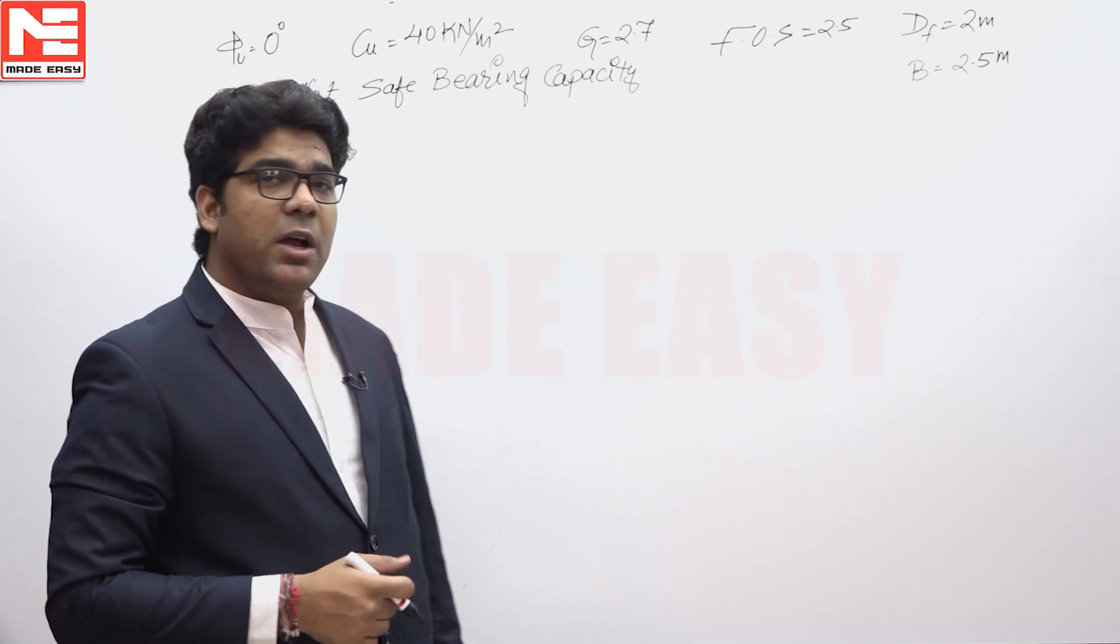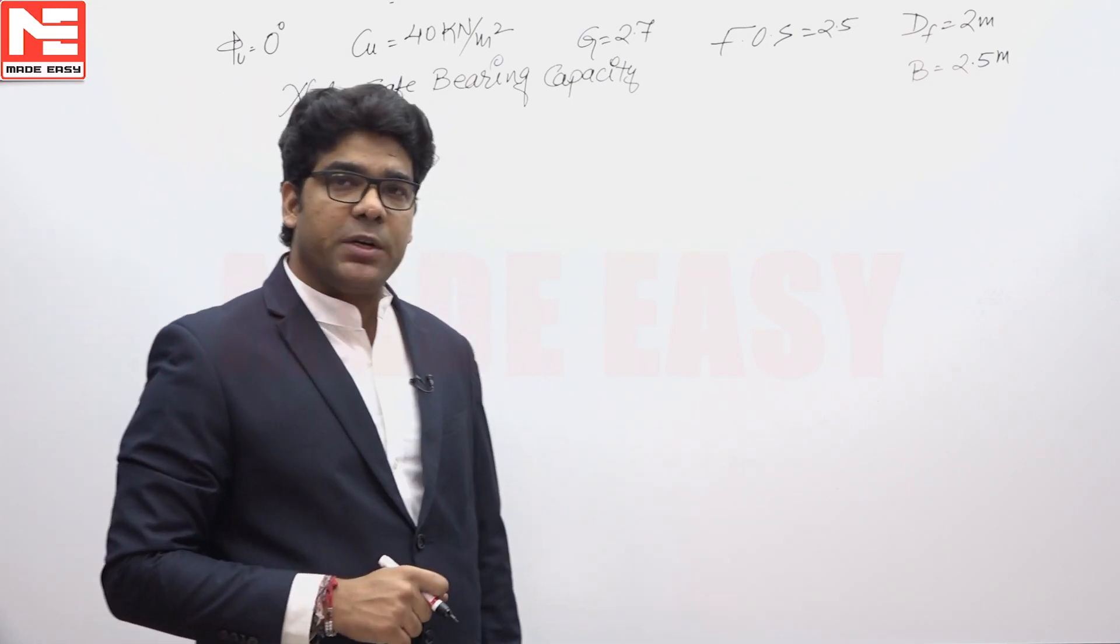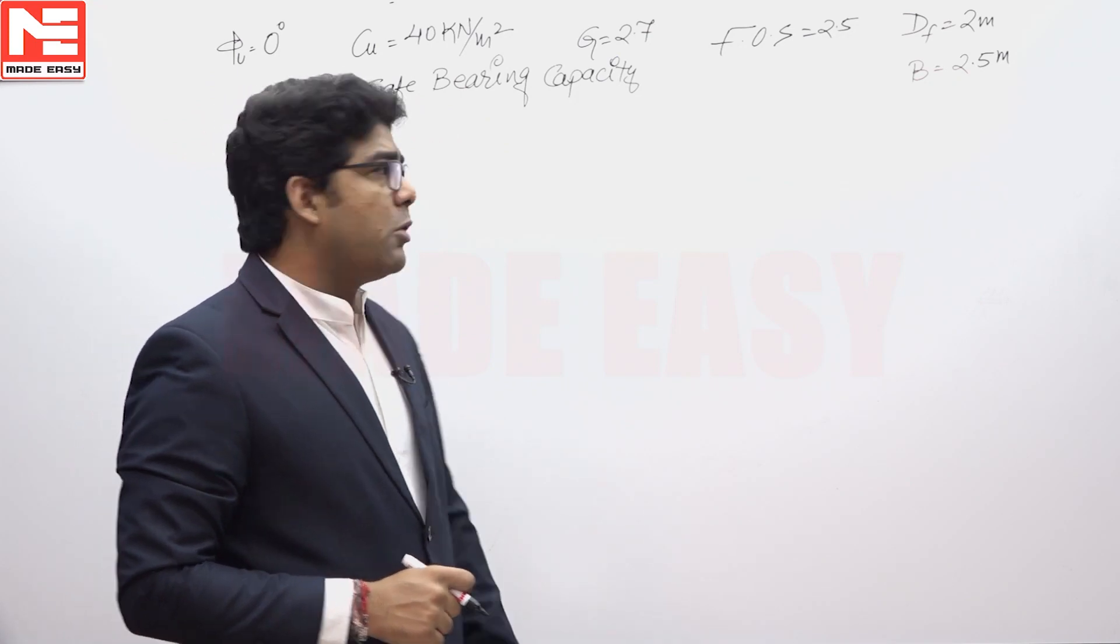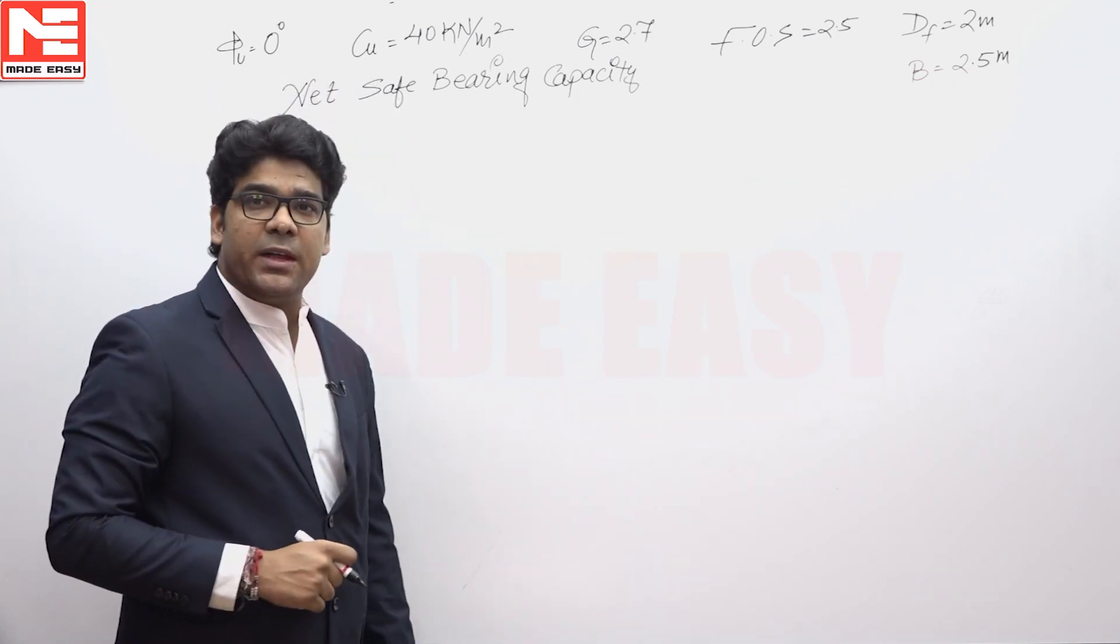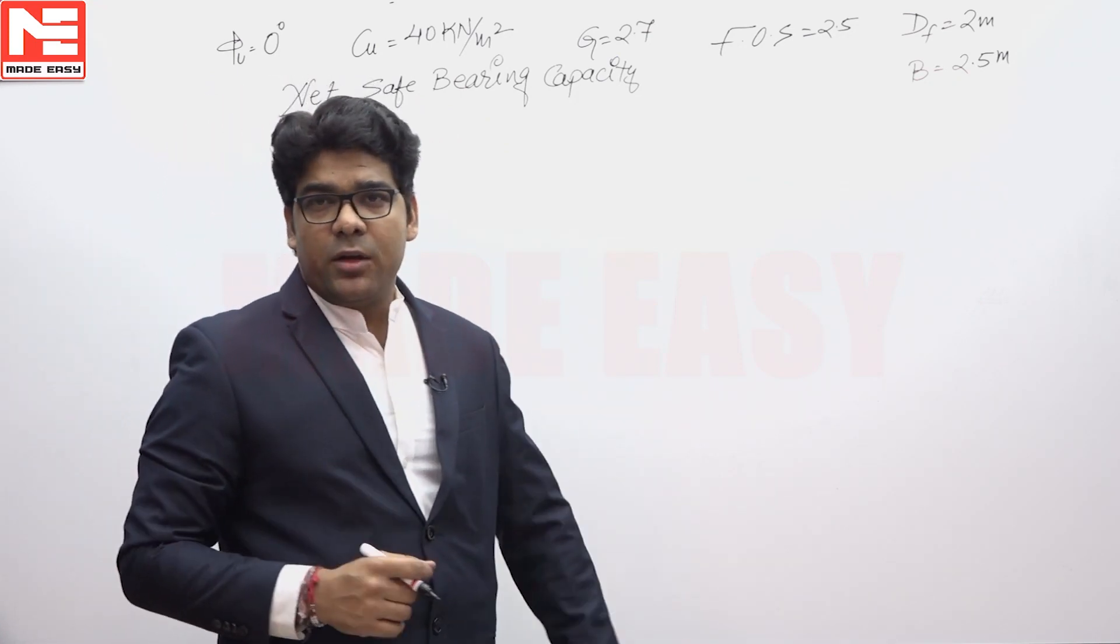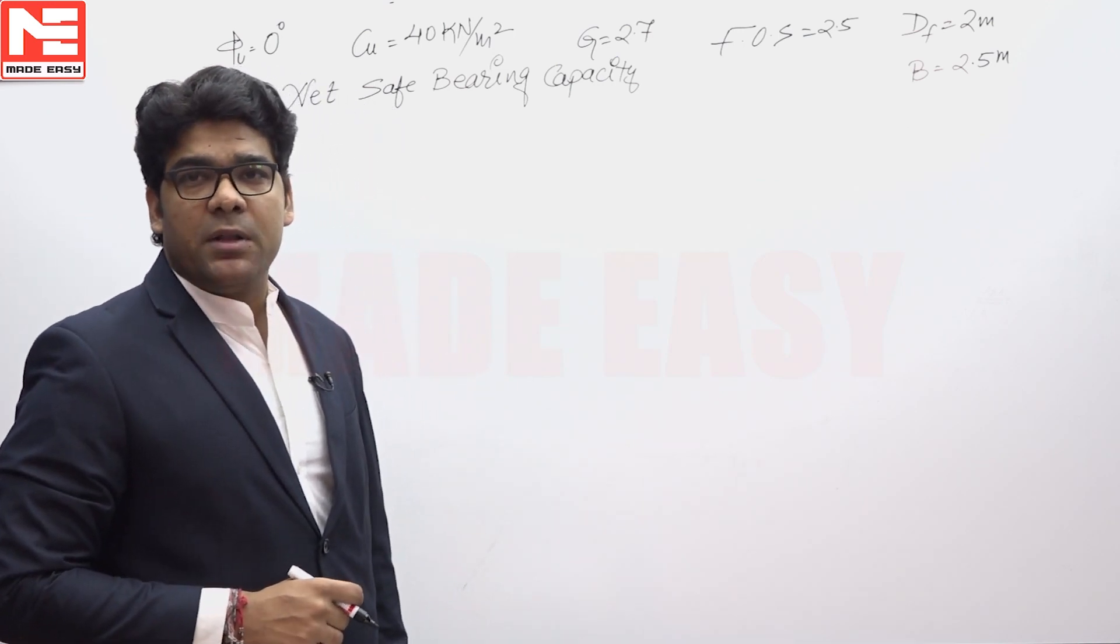A square footing is given with a width of 2.5 meters and depth of 2 meters. The question is asking about net safe bearing capacity, and we need to use Scampton theory.